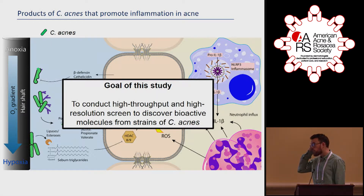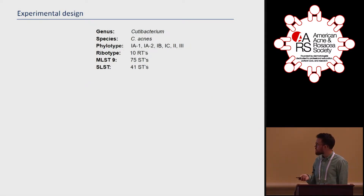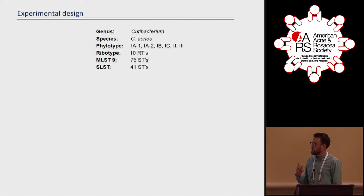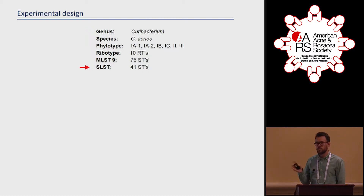The goal of this study was to conduct a high-throughput, high-resolution screen to discover bioactive compounds or molecules from C. acnes. C. acnes is separated into six major phylogenetic lineages, and you can sequence-type these by 16S ribotyping. The gold standard for typing is multi-locus sequence typing using eight or nine housekeeping genes, but we use single-locus sequence typing, which separates C. acnes into 41 distinct sequence types.